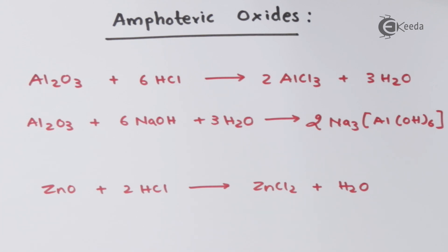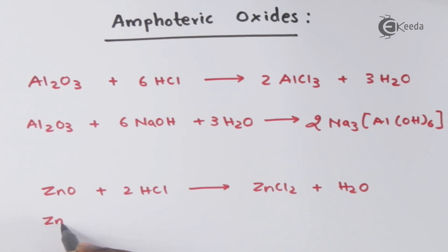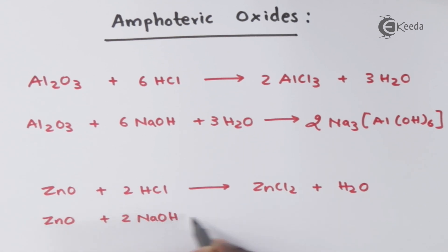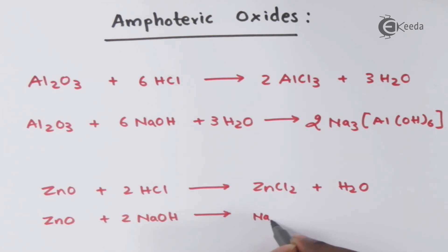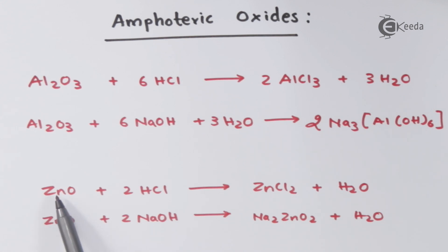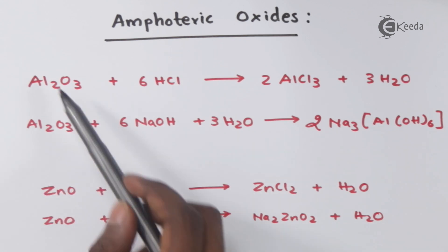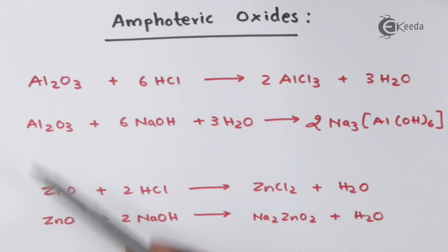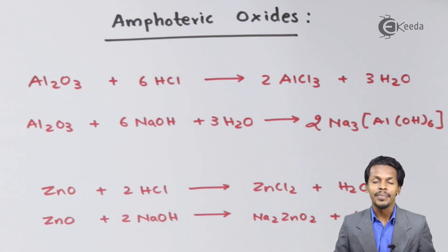ZnO can also react with NaOH. When ZnO reacts with two moles of NaOH, the product formed is Na2ZnO2 along with H2O. This proves that ZnO is acidic in nature in this reaction as well as basic in nature in the previous one, making these oxides known as amphoteric oxides.